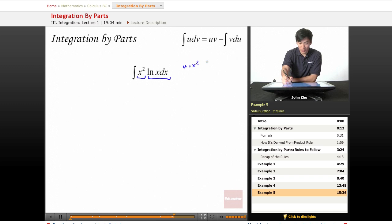So u equals x squared, dv equals ln of x dx. Well, now we have to take the integral of ln of x. The integral of x squared may be easier to carry out than ln of x.